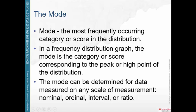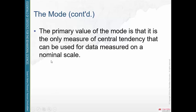The reason the mode is useful is that it can be used on any scale of measurement: nominal, ordinal, interval, or ratio. Nominal data is when your observations fall into categories — something like male or female, or eye colors like blue, brown, or green — categories with no numbers associated with them. Because there are no numbers associated with them, the mode is actually the only measure of central tendency you can use for nominal data. You can't find the mean; you can't add up categories and divide. The primary value of the mode is that it's the only measure of central tendency that can be used for nominal data.